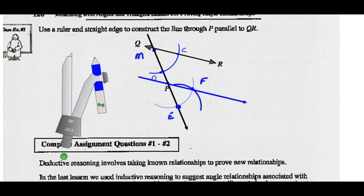That line, if things work out, should be parallel to the original line we had, which was line QR. So if we've done it correctly, these two lines should be parallel. You could use a compass and measure that to verify, but it works out nicely.